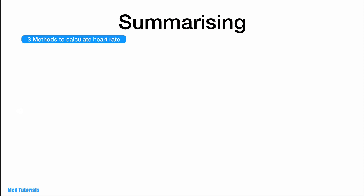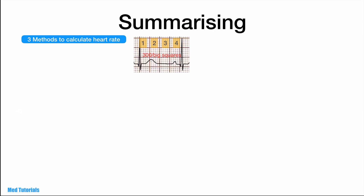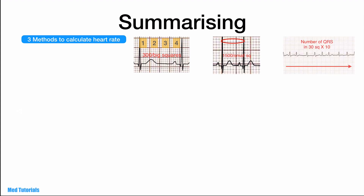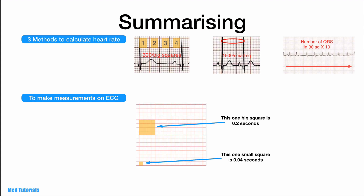Summarizing: we saw three methods of calculating heart rate. In the big square method, heart rate is 300 divided by the number of big squares. For a more accurate measurement, use 1500 divided by the number of small squares. The third method is useful especially for an irregular heart rate — count the number of QRS complexes in 30 big squares and multiply by 10. To make measurements of waves and intervals, remember: one big square equals 0.2 seconds and one small square equals 0.04 seconds.